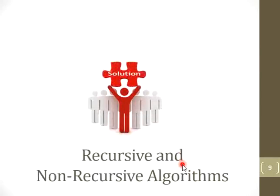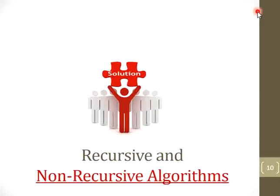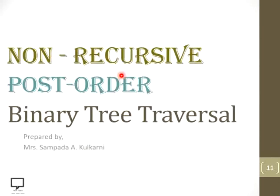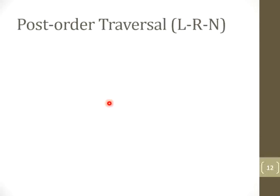So how can we return to the previous level or parent node? The solution is a recursive or non-recursive algorithm. The recursive algorithm for post-order traversal I have already explained in my previous session — a shortcut link is provided for reference. Here in this session I am focusing on the non-recursive algorithm, which follows the sequence: left subtree, right subtree, then root node.